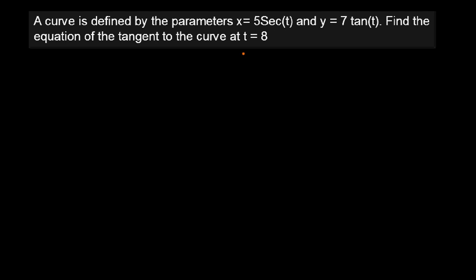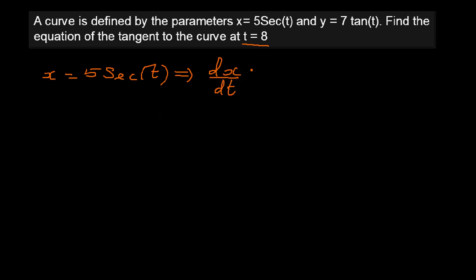This is a parametric function and we want to find the gradient of the tangent when t = 8. So x = 5 sec t. We differentiate with respect to t, so dx/dt — the derivative of sec t is sec t tan t — giving us dx/dt = 5 sec t tan t.